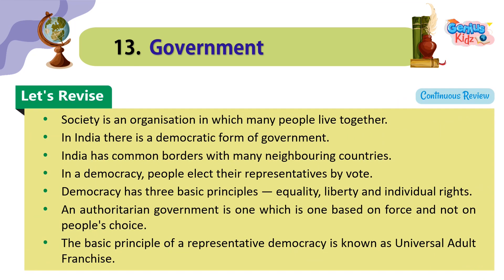Let's revise. Society is an organization in which many people live together. In India there is a democratic form of government. India has common borders with many neighboring countries. In a democracy, people elect their representatives by vote. Democracy has three basic principles: equality, liberty, and individual rights. An authoritarian government is one based on force and not on people's choice. The basic principle of a representative democracy is known as universal adult franchise.